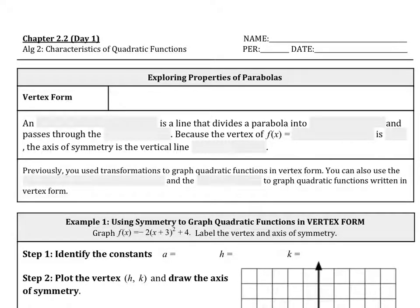Chapter 2.2, we're going to be graphing parabolas in vertex form and standard form. Vertex form is f(x) equals a times x minus h squared plus k. And a can't be zero because that would cancel this all out and then we would just be left with k, which is a different type of function.